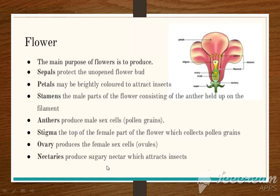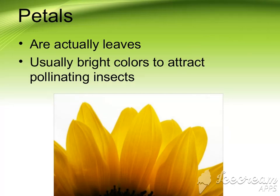Nectaries produce sugary nectar, which attracts insects. Basically, it is a juice-like component — the sugar contents of the juice. It attracts insects to the flower. The petals are usually bright colors to attract pollinating insects. As you can see in this picture, there are yellow petals present, and they attract insects for pollination.